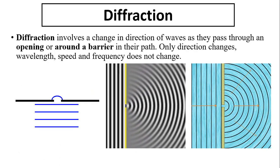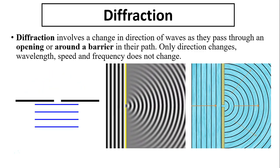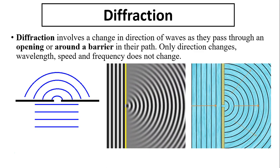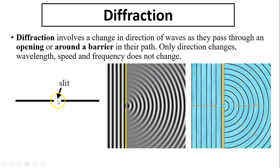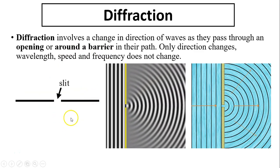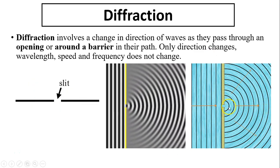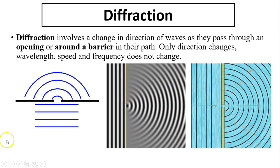The next boundary behavior is diffraction. Diffraction involves a change in direction of the wave as it passes through an opening or around a barrier in its path. Only direction changes — wavelength, speed, or frequency do not change, because it's still the same medium. In order for diffraction to occur, you need a slit or some kind of barrier. As you can see, the wave traveling to the right on the left side of the boundary travels in a semi-circular motion on the right side — the direction has changed, and that's called diffraction.